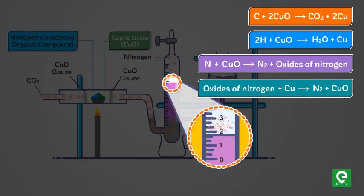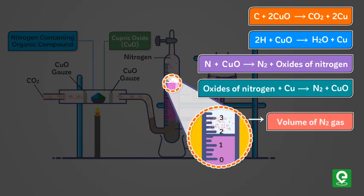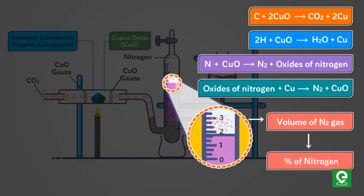The gaseous mixture consisting of CO2, H2O and N2 is collected over an aqueous solution of potassium hydroxide. All the gases except nitrogen are absorbed by the solution. The volume of nitrogen gas collected is measured. From the volume of nitrogen obtained, the percentage of nitrogen in the compound is calculated.